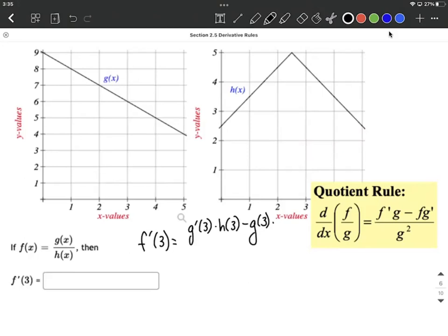evaluated at 3, multiplied by the derivative of the denominator, h prime in our case, evaluated at 3, all divided by the denominator, h of 3 in this case, squared.